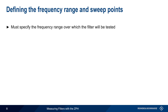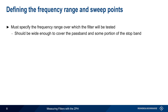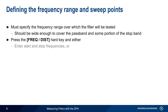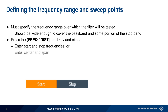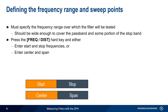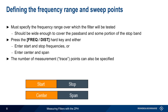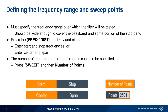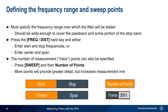We also need to specify the frequency range over which the filter will be tested. This should cover both the pass band as well as some portion of the stop band. To define the frequency range, press the Frequency Distance hard key and then enter the range either as start and stop frequencies, or as center and span. The number of measurement or trace points over the span can also be specified by pressing the Sweep hard key and choosing Number of Points. Recall that a greater number of points will provide greater detail, but will also increase measurement time.